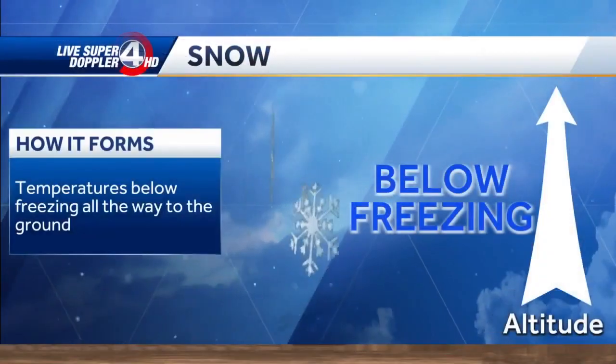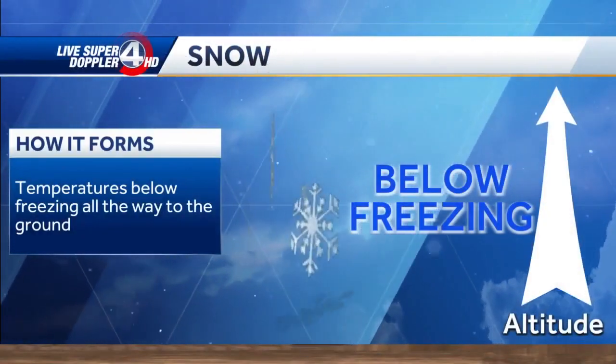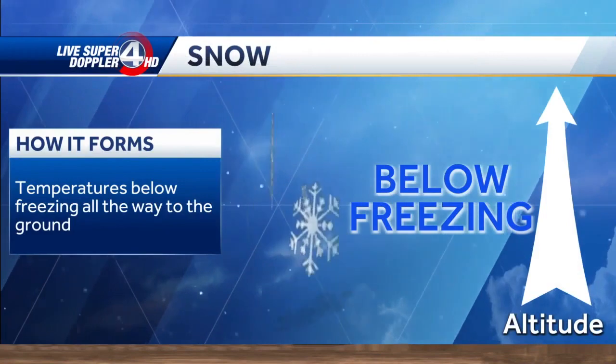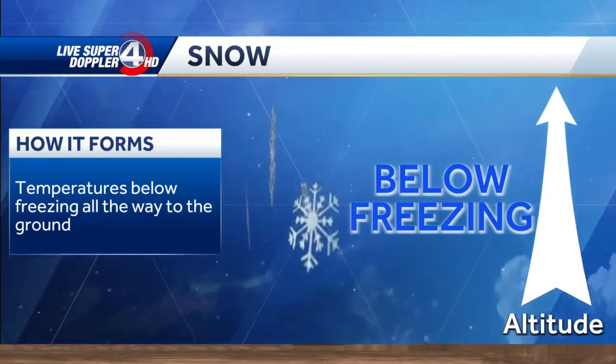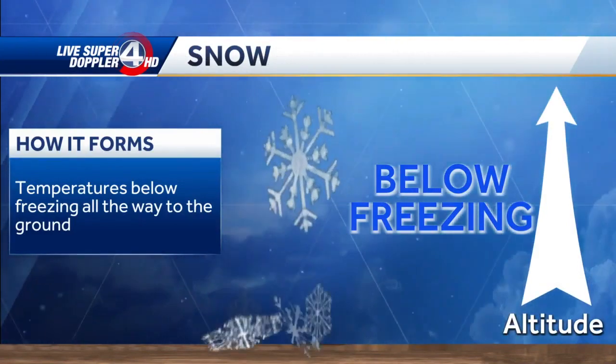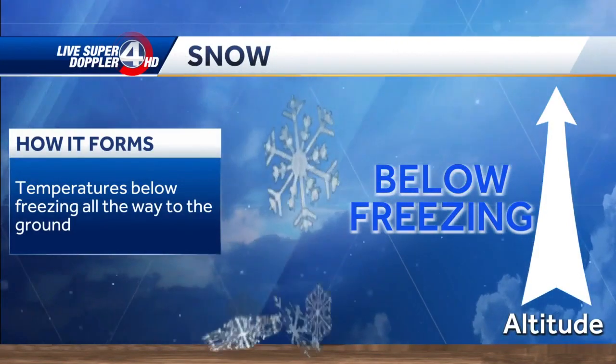It could be snow at times. It could be sleet or freezing rain. They're a little bit different, each one of them, in terms of how they form and in terms of the impacts as well. So let's break that down. Snow is obviously the easiest to understand. Snow forms when temperatures are below freezing from the surface all the way up to the top of the upper atmosphere. Pretty straightforward.